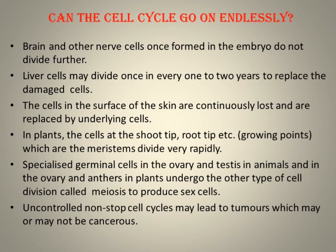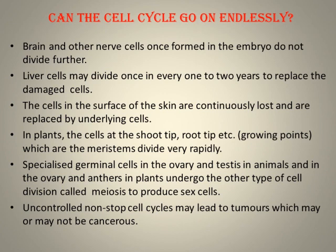In plants, egg cells are produced from ovaries and pollen grains (containing male gametes) are produced from anthers. These are always produced by meiosis, not mitosis. Mitosis is only for body cells or somatic cells. Uncontrolled, non-stop cell cycles may lead to tumors. Tumors may or may not be cancerous — benign tumors are not harmful, but malignant tumors are cancerous and may spread to different organs through blood.